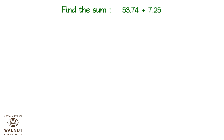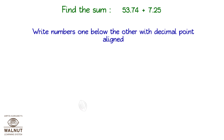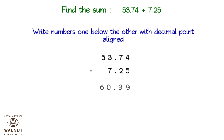Find the sum 53.74 plus 7.25. Write the numbers one below the other with the decimal point aligned. 53.74 plus 7.25 is equal to 60.99.